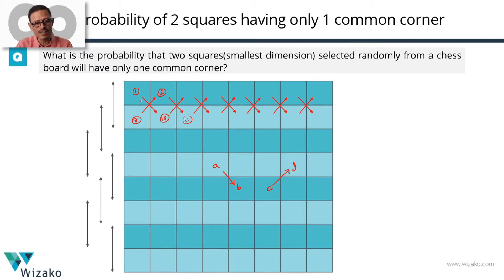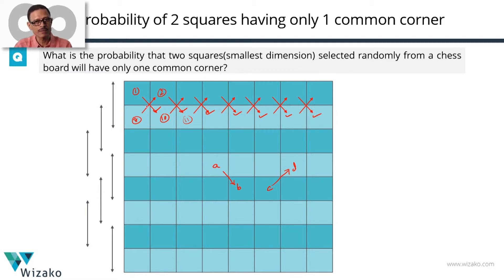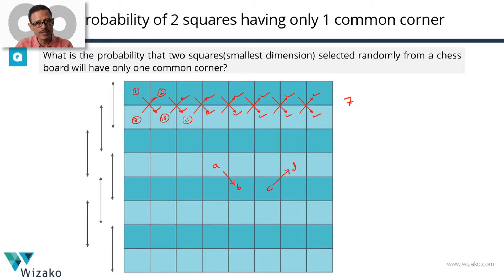If you count the pairs in two adjacent rows marked by the downward arrows, you'll find seven such pairs. Similarly, if you count the pairs marked by the upward arrows, we'll have another seven. So in two adjacent rows, there are seven upward arrows and seven downward arrows — seven plus seven gives us fourteen pairs of squares which share exactly one corner in common.